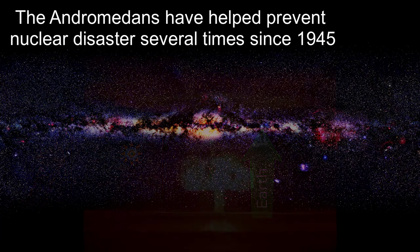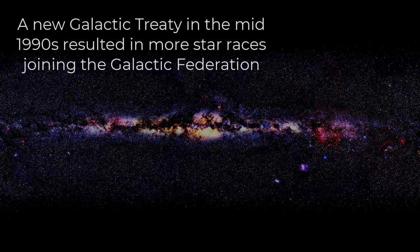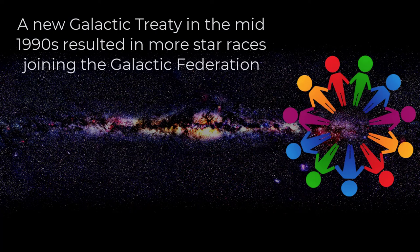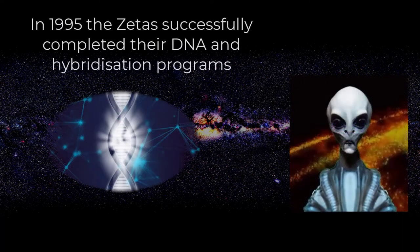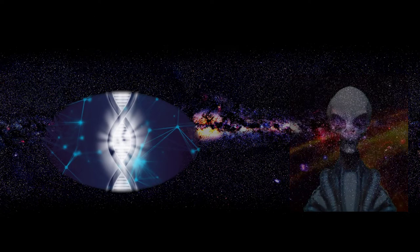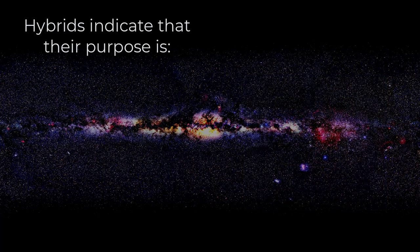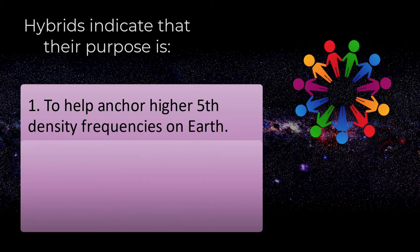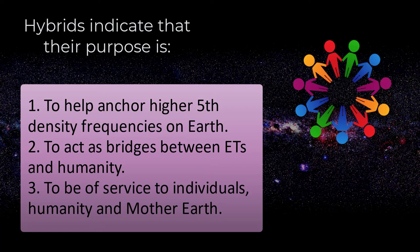The Andromeda have helped prevent nuclear disaster several times since 1945. A new galactic treaty in the mid-1990s resulted in more star races joining the Galactic Federation. Star races that had made self-serving deals with secret Earth groups stopped cooperating. In 1995, Zetas successfully completed their DNA and hybridisation programs. Today, many hybrid children and adults are living on motherships, and some are living on Earth. Hybrids indicate that their purpose is to help anchor fifth density frequencies on Earth, to act as bridges between ETs and humanity, and to be of service to individuals, humanity and Mother Earth.